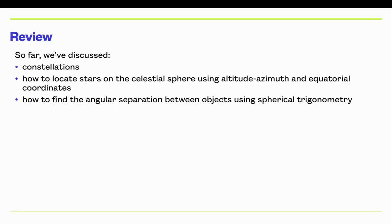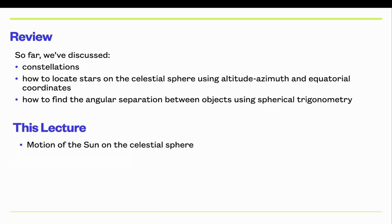Lecture 1.3: The Motion of the Sun. So far we've discussed constellations, how to locate stars on the celestial sphere using two different coordinate systems, and how to find the angular separation between objects using spherical trig.